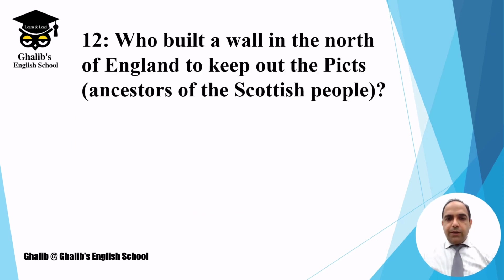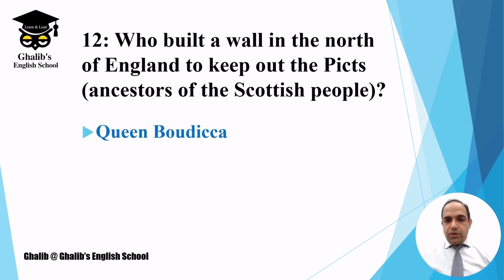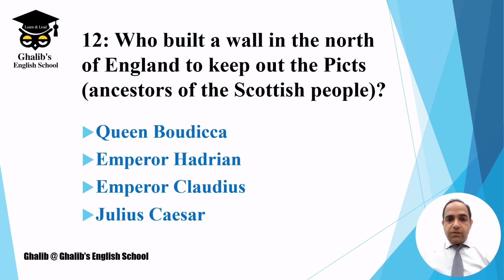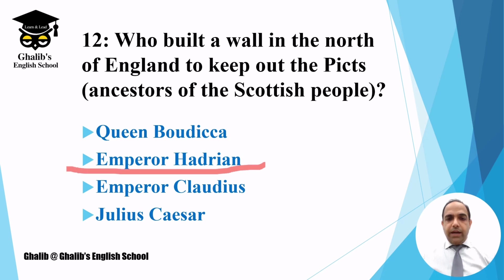Question number twelve: who built a wall in the north of England to keep out the Picts? The Picts were the ancestors of the Scottish people. The options are Queen Boudicca, Emperor Hadrian, Emperor Claudius, or Julius Caesar. We can still see some remains of this wall at the border of England and Scotland. The answer is Emperor Hadrian.